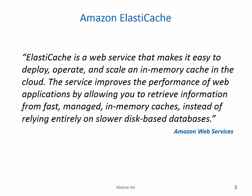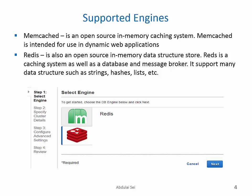ElastiCache is a web service that makes it easy to deploy, operate, and scale an in-memory cache in the cloud. The service improves the performance of web applications by allowing you to retrieve information from fast, managed in-memory caches instead of relying entirely on slower disk-based databases. Amazon ElastiCache supports two types of engines: Memcached and Redis. Both are open source. Redis is a caching system as well as a database and message broker.